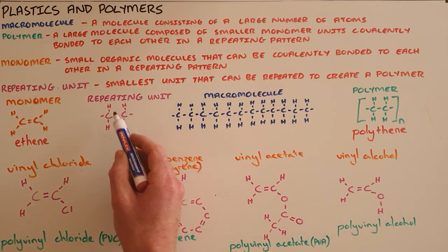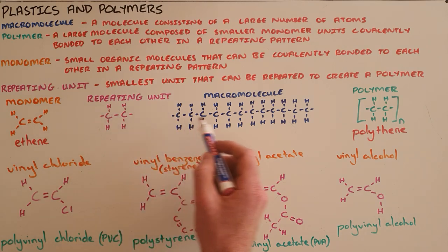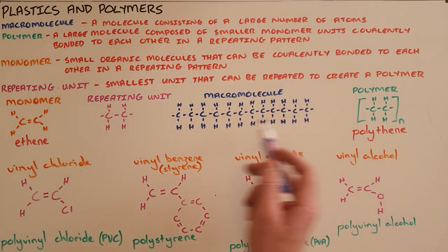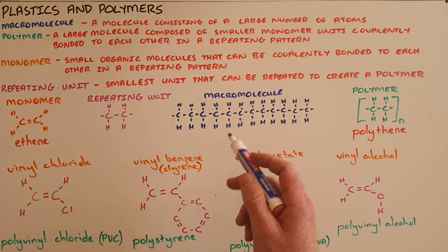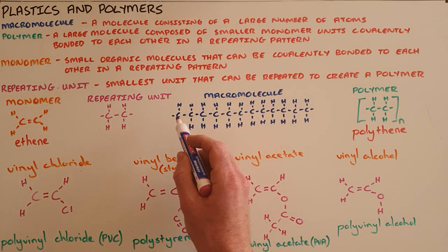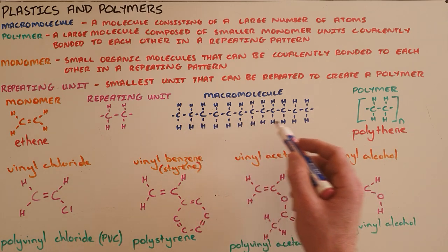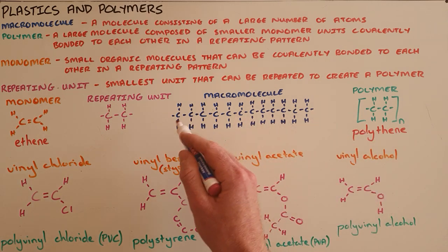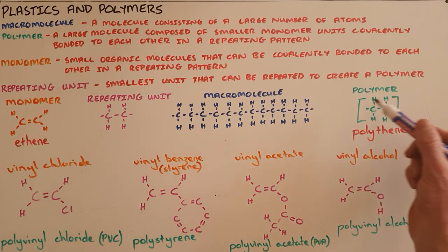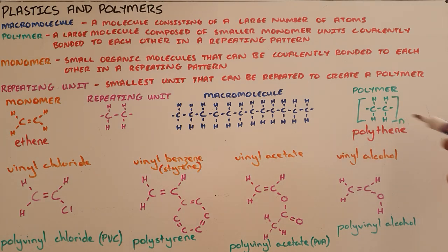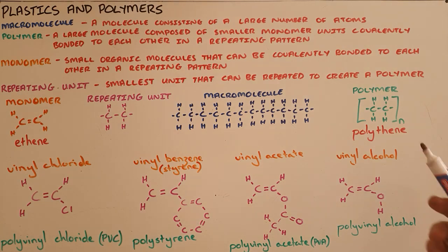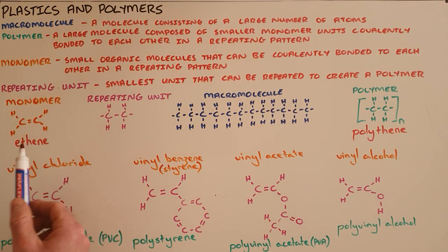And so these repeating units can attach themselves to each other to form a very, very long chain, also referred to as a macromolecule. Now because we often do not want to or are not able to write out how many carbons exactly make up this macromolecule, we often write it in its polymer form where we show the repeating unit in brackets with a number n, which is an integer number that says how many repeating units there are. So once again, with the monomer ethene,